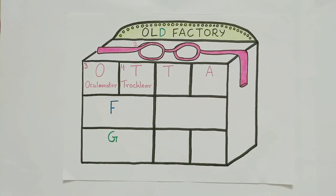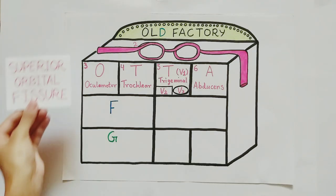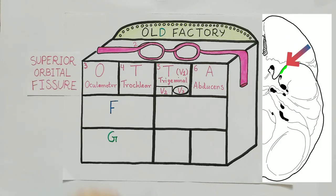Oculomotor, trochlear, trigeminal, and abducens nerve. And why am I calling this superior floor? It's because these nerves pass through the superior orbital fissure of the skull base.